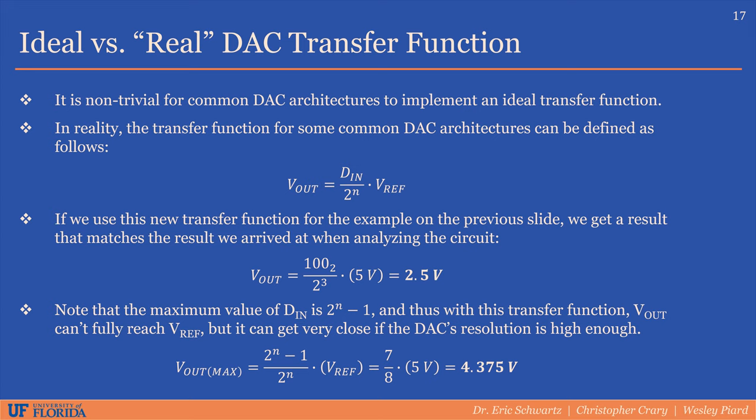In the example of a 5 volt reference voltage, the maximum voltage we can output would be 4.375 volts. If necessary, modifications can be made to the architecture to compensate for this error.